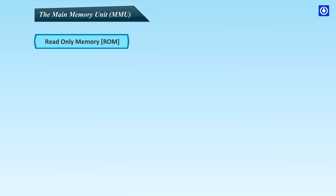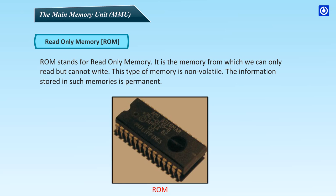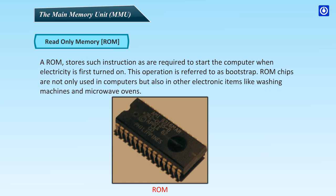Read-Only Memory (ROM): ROM stands for read-only memory. It is the memory from which we can read but cannot write. This type of memory is non-volatile; the information stored in such memories is permanent. A ROM stores such instructions as are required to start the computer when electricity is first turned on — this operation is referred to as bootstrap. ROM chips are not only used in computers but also in other electronic items like washing machines and microwave ovens.